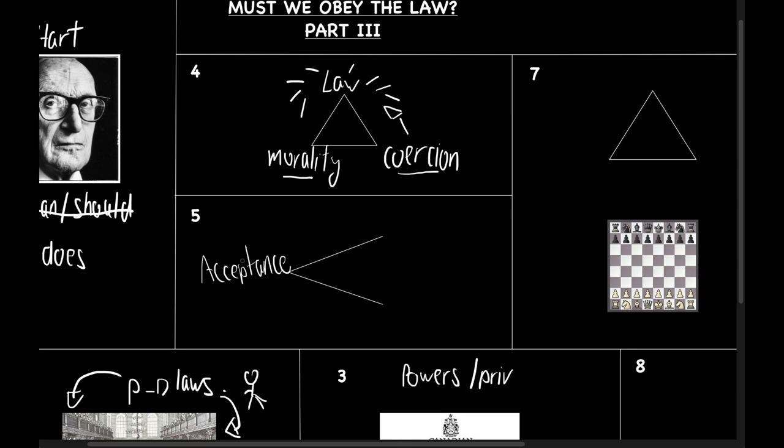While laws possess a variety of characteristics, Hart largely distinguishes between two types of laws. There are the primary rules of obligation and the secondary rules of obligation.